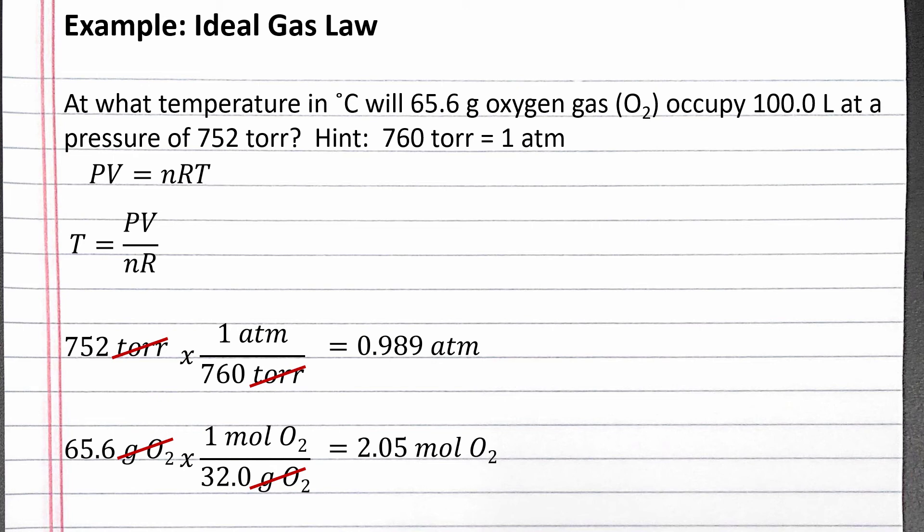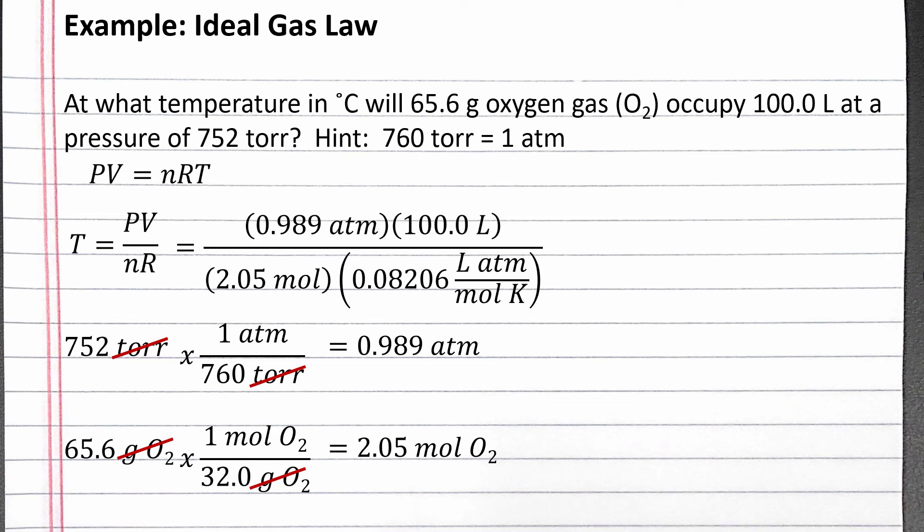We can substitute these into the ideal gas law equation. Volume is already given in liters in the problem, and the ideal gas law constant is 0.08206 liter atmospheres per mole Kelvin. Completing the calculation, we get 588 Kelvin.